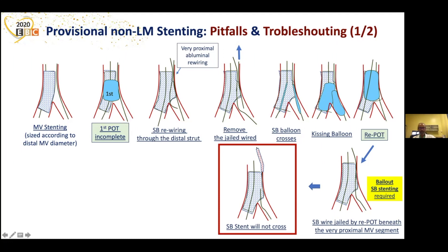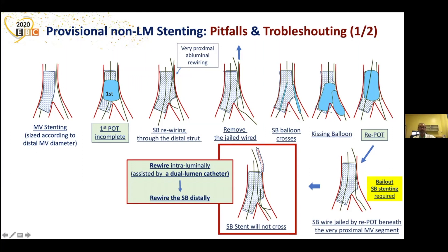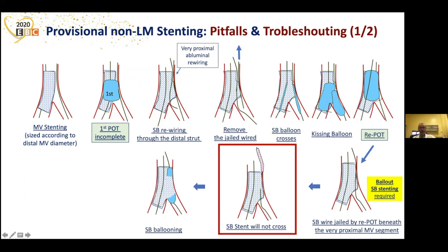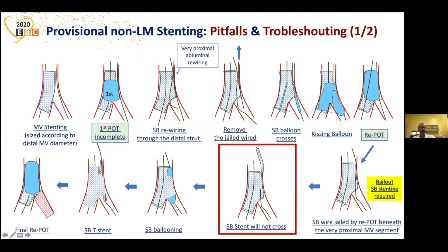There is a solution. You have to rewire intraluminally, possibly assisted by a dual-lumen catheter, and try to rewire the side branch distally again. If this is not possible, you have another solution: just go with the balloon, de-jail, and create some space to cross. Then you can cross with your side branch stent, go into the side branch, implant the stent in a T-fashion, perform a kissing balloon, and then a final repot to complete the procedure.